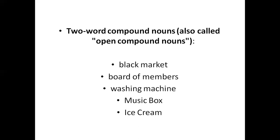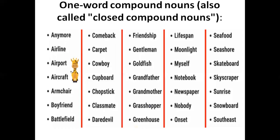More examples of open compound nouns: music box — music is a noun and box is also a noun; ice cream — ice is a noun and cream is also a noun. Both are nouns but there is no hyphen between them. These are all two-word compound nouns, also called closed nouns.